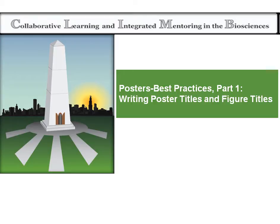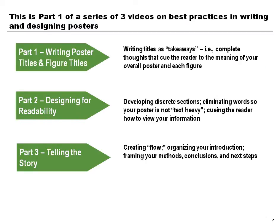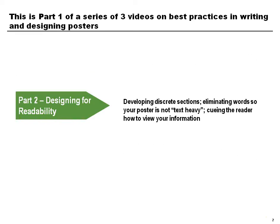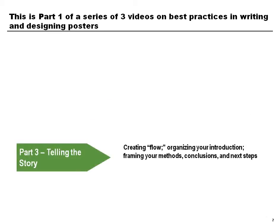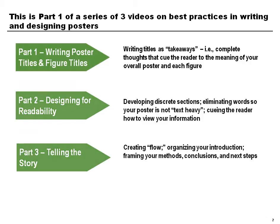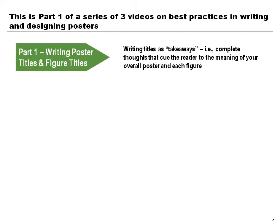Welcome to our first series on poster best practices: writing poster titles and figure titles. This is part one of a three-part series of videos on best practices in writing and designing posters. Part two focuses on designing for readability — developing discrete sections, eliminating words so your poster is not text-heavy, and cueing the reader on how to view your information. Part three focuses on telling the story of your poster: creating flow, organizing your introduction, framing your methods, conclusions, and next steps. In this video, we focus on writing titles as takeaways — that is, complete thoughts that cue the reader to the meaning of your overall poster and each figure.